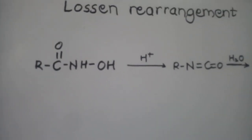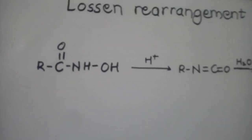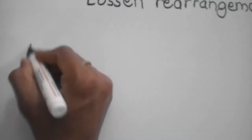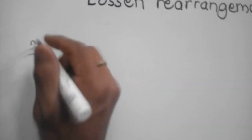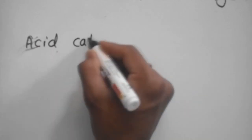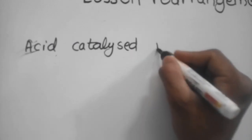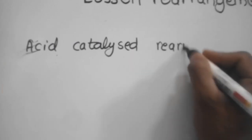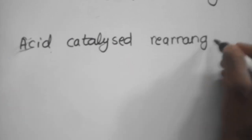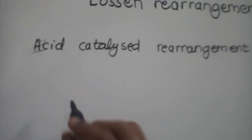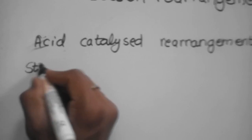There are two theories for the mechanism: the acid-catalyzed rearrangement and the base-catalyzed rearrangement. The mechanism of the acid-catalyzed rearrangement consists of three steps. Now we will see Step 1.